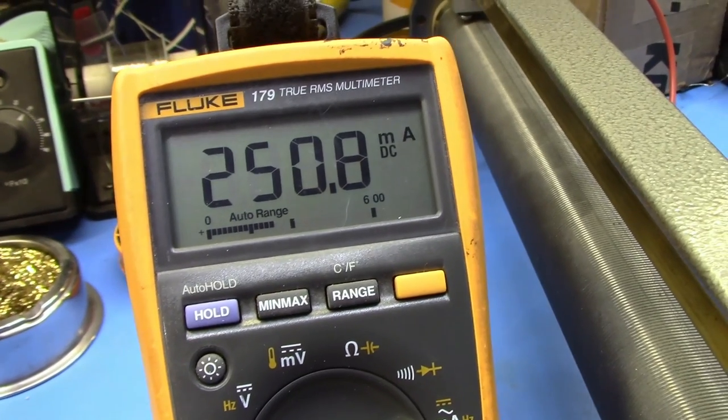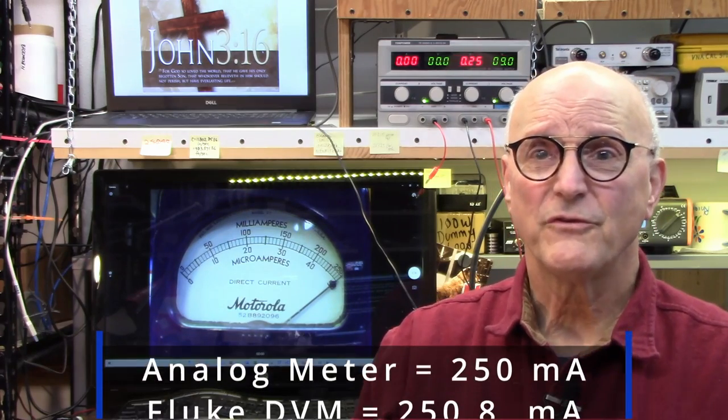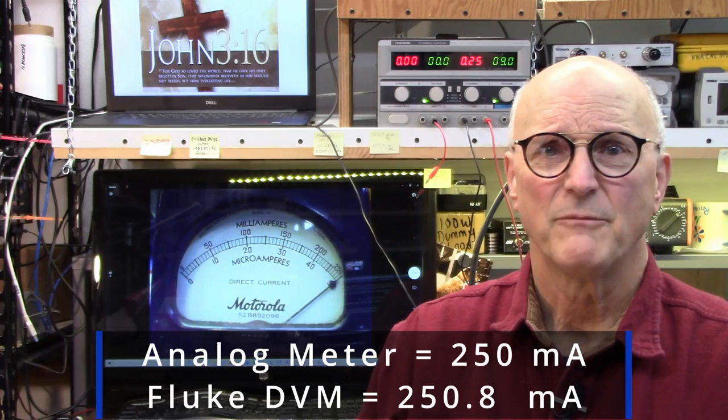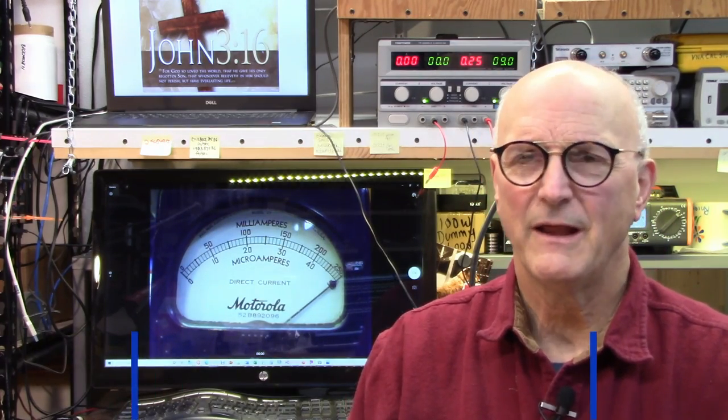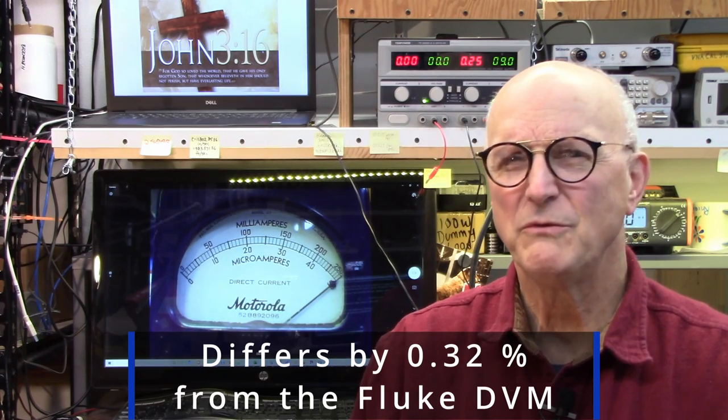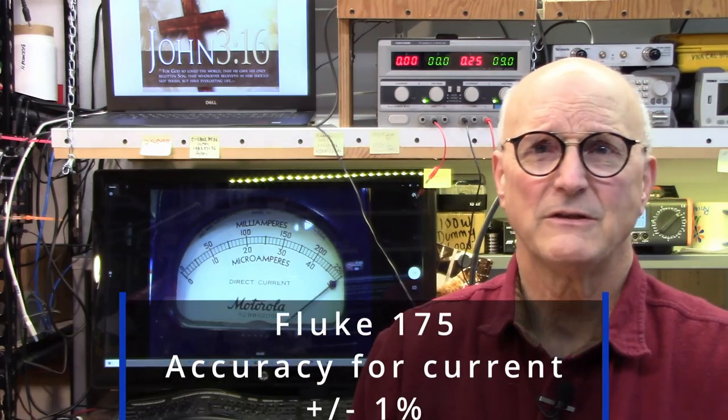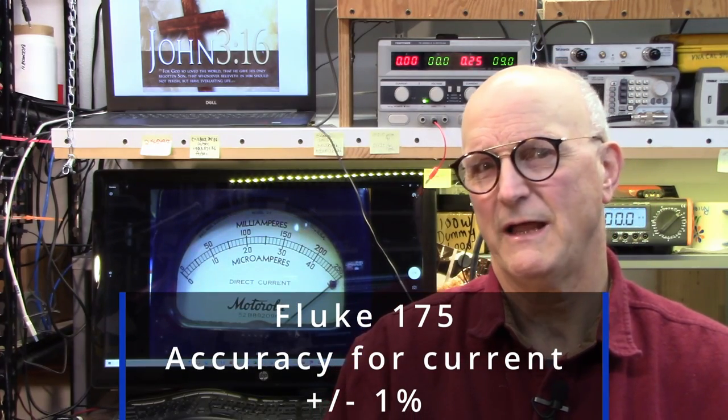250.8 milliamps. So when I got my meter all the way up to full scale, 250 milliamps according to it, my DVM read 250.8 milliamps. So that means that my analog meter, which I just set up with this shunt and everything, differs from my DVM by 0.32%. That's pretty doggone good. Now I'm using my Fluke 175 to measure the current. And according to the manufacturer's specifications, it is to be accurate within 1%.